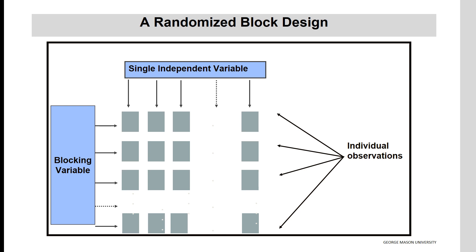A randomized block design, or any design that includes two independent variables of which one is the blocking, is shown in this slide. The main independent variable of interest is placed in the columns, and the blocking variable is placed in the rows. The cells or squares in the middle include the numerical values of the dependent variable.